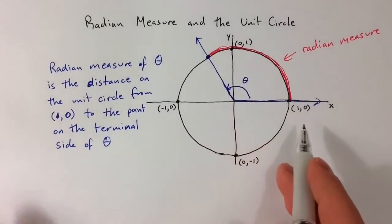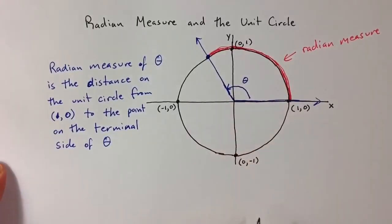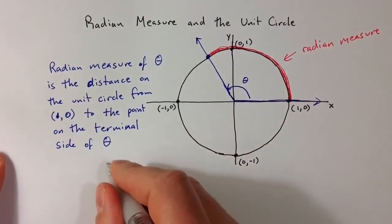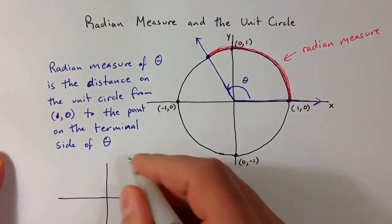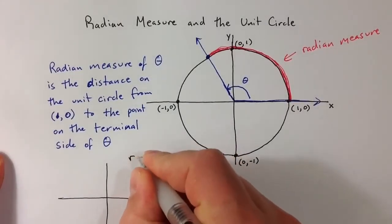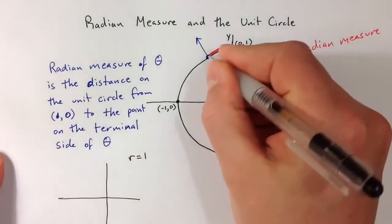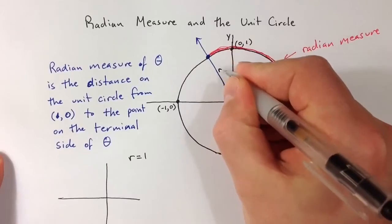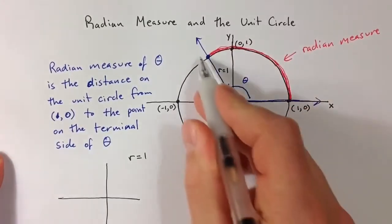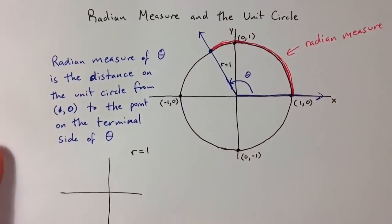Let's think about what the number that we could attach to this would be. For a unit circle, the radius equals 1, so the r value that we would associate with that point on the terminal side would be 1.